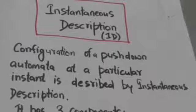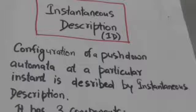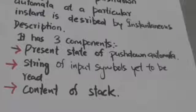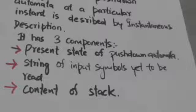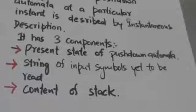Hello friends, welcome back. In this tutorial we will study about instantaneous description of a pushdown automata. The configuration of a pushdown automata at a particular instant is described by an instantaneous description. It has three components: first, the current state of the pushdown automata; second, the string of input symbols yet to be read; and third, the content of the stack.